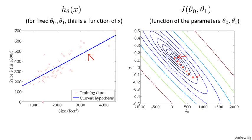So that's gradient descent, and we've run it and gotten a good fit to our data set of housing prices. You can now use it to predict — for example, if your friend has a house of 1250 square feet, you can read off the value and tell them they might get $250,000 for their house.